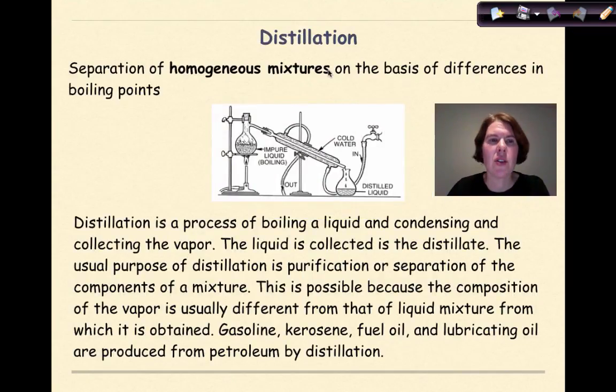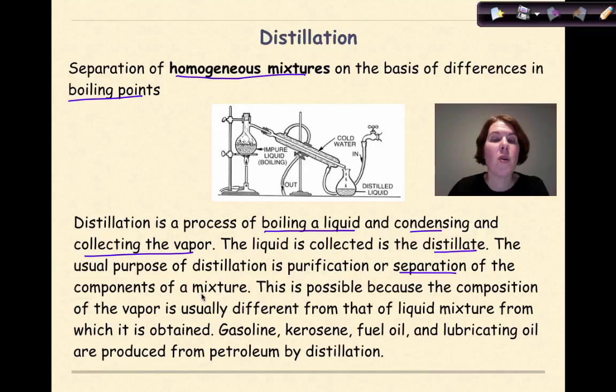Next we have distillation. Separation of homogeneous mixtures based on differences in boiling points. So here is our setup right here. Distillation is a process of boiling a liquid and condensing and collecting the vapor. The liquid collected is called the distillate. The usual purpose of distillation is purification or separation of the components of a mixture. This is possible because the composition of the vapor is usually different from that of the liquid mixture from which it is obtained. Gasoline, kerosene, fuel oil, and lubricating oil are produced from petroleum by distillation.